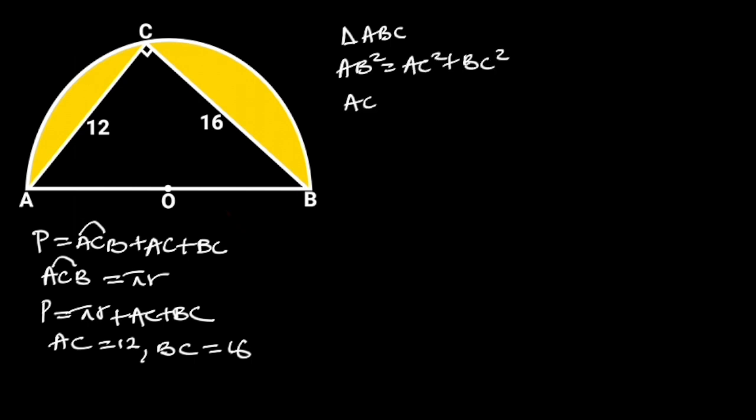AC is equal to 12. BC is equal to 16. Substituting these values in the equation will give us AB squared is equal to 12 squared plus 16 squared. 12 squared is equal to 144, and 16 squared is equal to 256. 144 plus 256 is equal to 400.